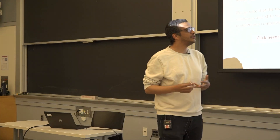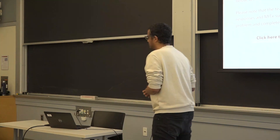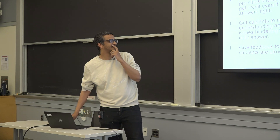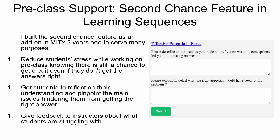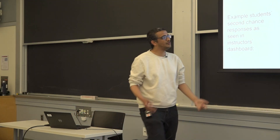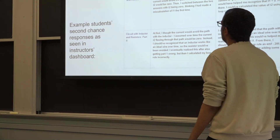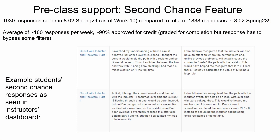In the beginning, some students were using it, but the usage of second chance has been increasing a lot. This semester it's gone up significantly — more than last year. We have almost 2,000 responses so far this semester, while the whole of last year in the same course with the same enrollment we had a total of about 1,800. There's no way a human can read through all these responses. As an instructor, I see all their responses in a dashboard — what went wrong, what the issue was, and how they would have done it differently.